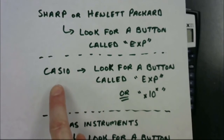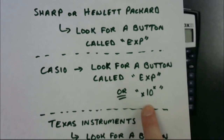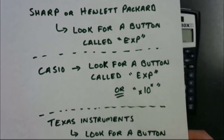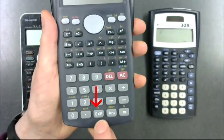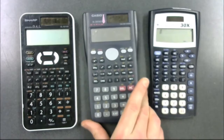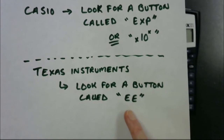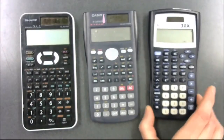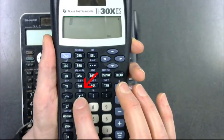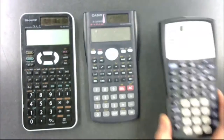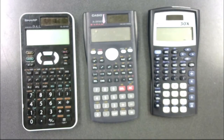If your calculator is made by Casio, you'll either have an EXP button or one that says 'times 10 to the power of X.' Look around your keypad for either of those. This Casio calculator also has an EXP button, located down here. If your calculator is made by Texas Instruments, look for a button that says EE — capital EE. On this Texas Instruments calculator, EE is a second function, so you'd press second function and then that button to get EE. Take a moment to look at your calculator and figure out your scientific notation button — is it EXP, times 10 to the power of X, or capital EE?